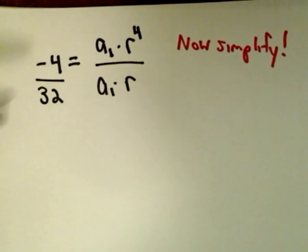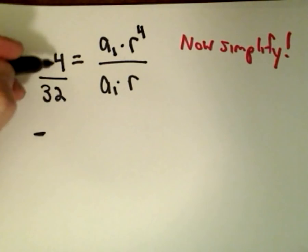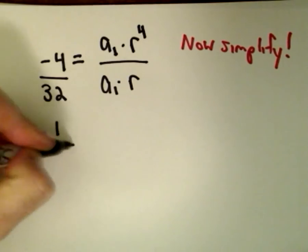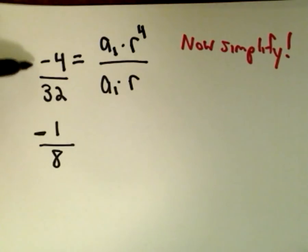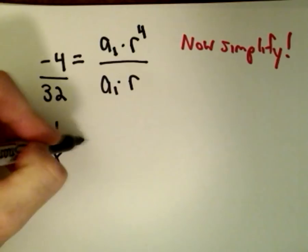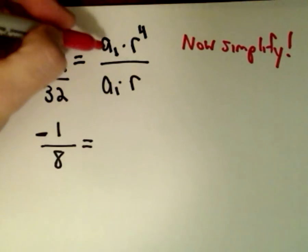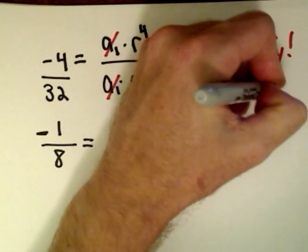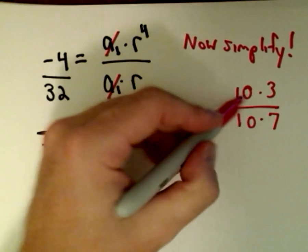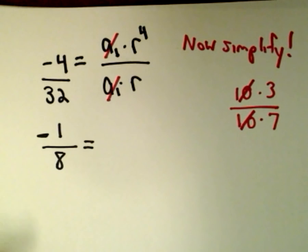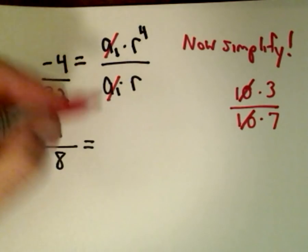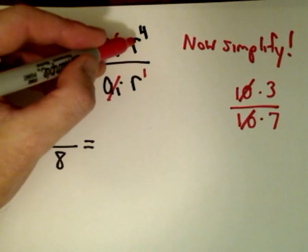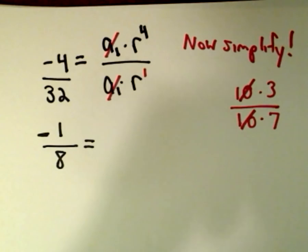On the left side: a negative divided by a positive is negative. We can divide both 4 and 32 by 4, so negative 4 over 32 reduces to negative 1 eighth. On the right side, a sub 1 appears in both numerator and denominator, so we can cancel it out — just like canceling common factors. We're left with r to the fourth over r to the first, which by properties of exponents simplifies to r to the third power.